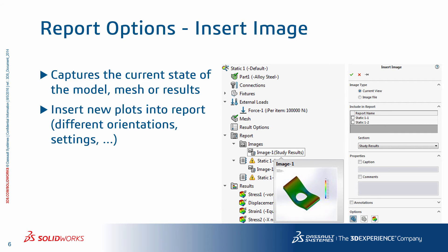When you generate a report, the images correspond to the current state of the model, mesh, or results. Most of the time you want to see results with different settings or in different orientations. For this, you can capture current images and insert them into your report. You must publish the report to see the new images in the report.